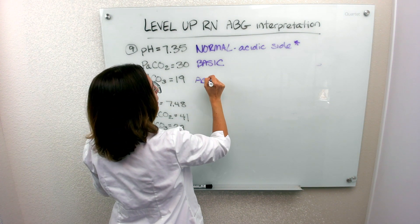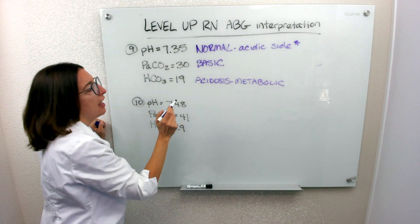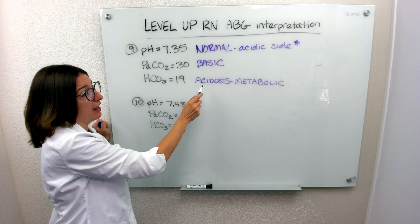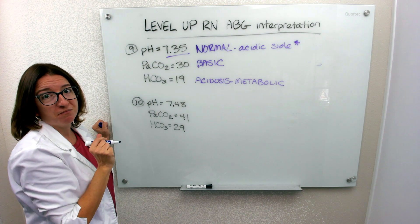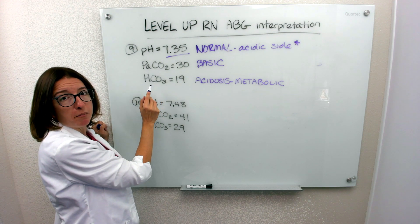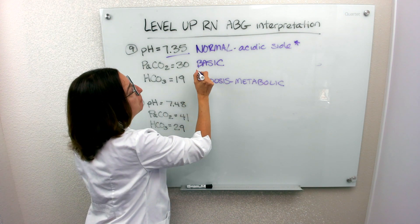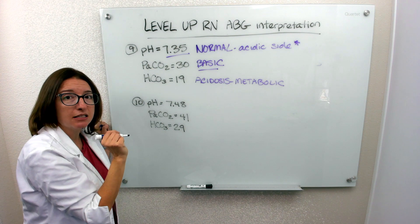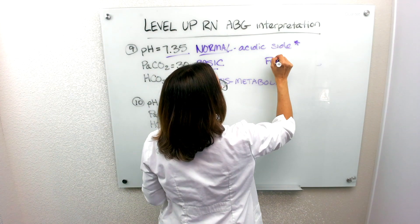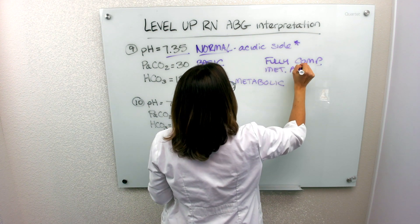So we know that we have metabolic acidosis that the respiratory system has fixed, and it is fully compensated for that metabolic acidosis because our pH is within normal range. We've got acidosis that was caused by the metabolic system, which is represented by HCO3. But the respiratory system has come in to save the day. It has become more basic to counteract that acidosis and brought the pH into normal range. So in this case, we have fully compensated metabolic acidosis.